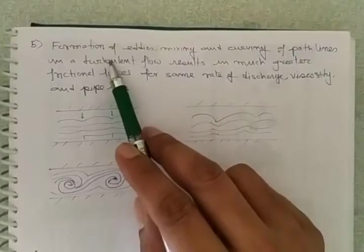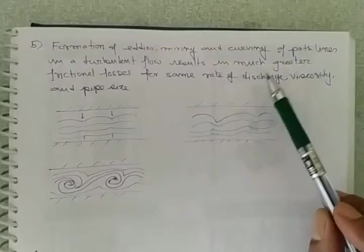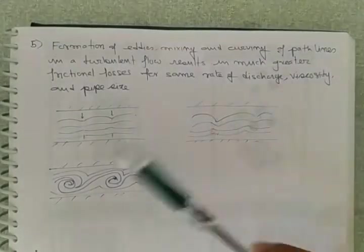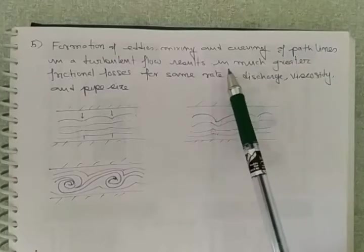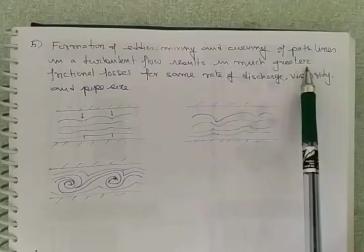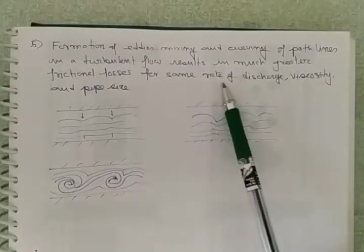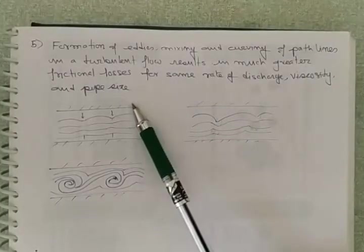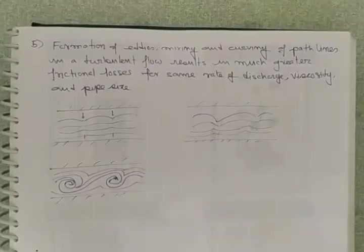Next one. Formation of eddies, mixing and curving of path lines in a turbulent flow result in greater frictional losses for the same rate of discharge, viscosity and pipe size. So if you observe these three figures.